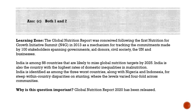The six nutrition targets were set by the 2012 World Health Assembly for maternal, infant, and young child nutrition, to be met by 2025. The six targets are: reduce stunting by 40 percent in children under five years of age; reduce anemia by 50 percent among women aged 19 to 49 years; ensure a 30 percent reduction in low birth weight; ensure no increase in childhood overweight; increase the rate of exclusive breastfeeding in the first six months to at least 50 percent; and reduce and maintain childhood wasting to less than five percent.